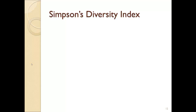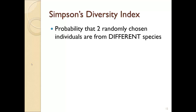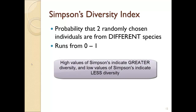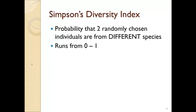The one I'm going to show you is called Simpson's Diversity Index, and it does just that. I like this index because it has an interpretation based upon probability. Simpson's is basically the probability that two randomly chosen individuals are from different species. This index runs from 0 to 1, and if it's higher, that means more biodiversity. If you have more diversity, the probability that you grab two individuals at random and they'll be from different species is pretty high.